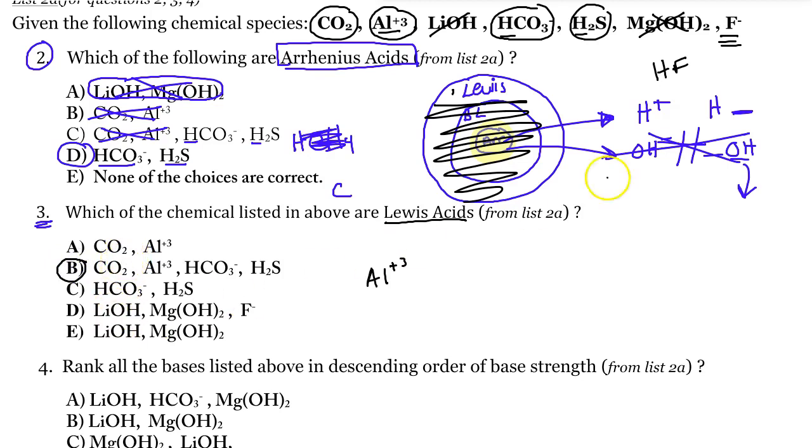Number 4 states, rank all the bases listed above in descending order, meaning going to start with the strongest base and go down. So when I do that, I see my bases. My bases are, let's just light them up here. Let's take away these crosses because we were looking for acids before. Let's get rid of that. So my bases are right here.